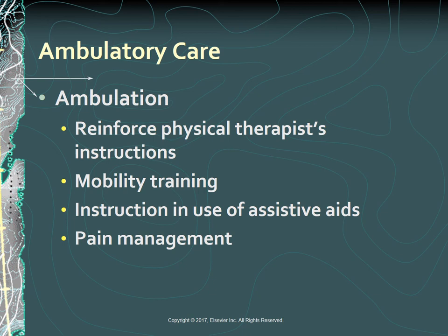Mobility training and instruction in the use of assistive devices—canes, crutches, and walkers—constitute major areas of responsibility for physical therapists. Reinforce these instructions to the patient. The patient with lower extremity dysfunction usually starts mobility training when able to sit in bed and dangle the feet over the side. Collaborate with the physical therapist to administer analgesia before the physical therapy session.